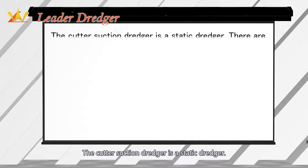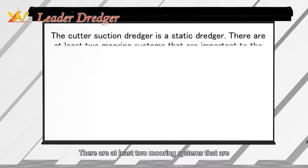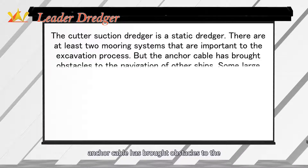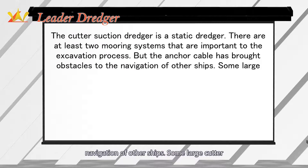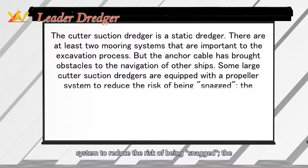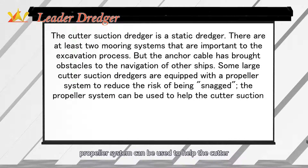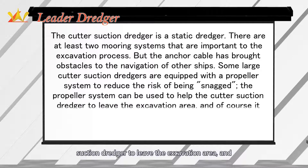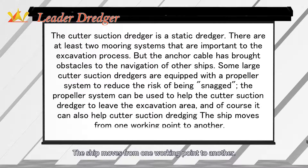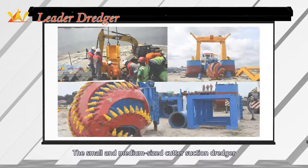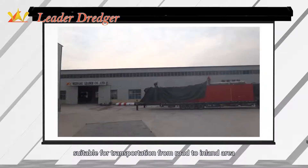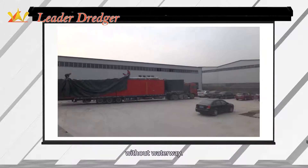The cutter suction dredger is a static dredger. There are at least two mooring systems that are important to the excavation process. However, anchor cables can obstruct the navigation of other ships. Some large cutter suction dredgers are equipped with a propeller system to reduce the risk of being snagged. The propeller system can help the dredger leave the excavation area and move from one working point to another. Small and medium-sized cutter suction dredgers can be made detachable, which is more suitable for transportation from road to inland areas without waterways.